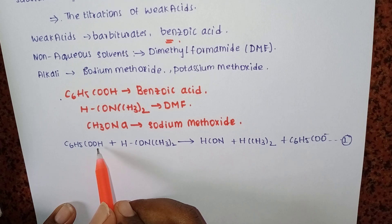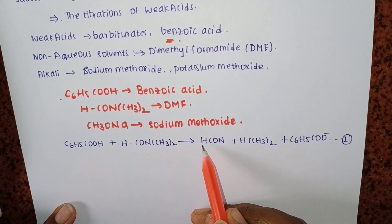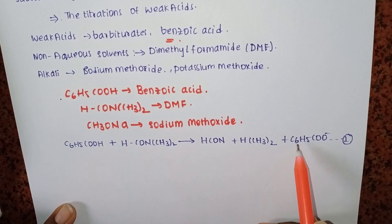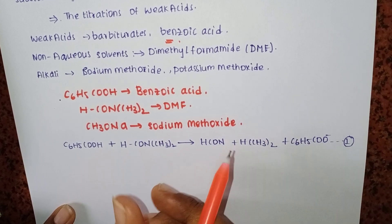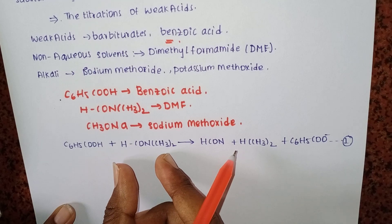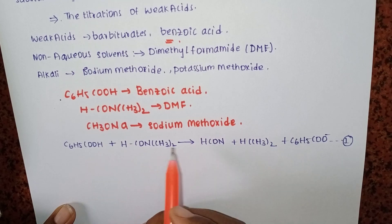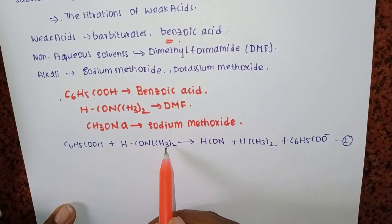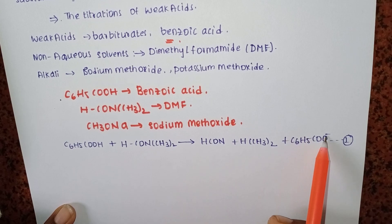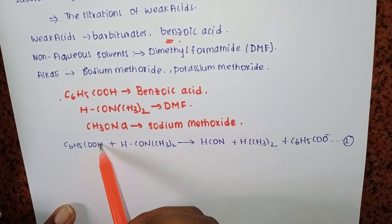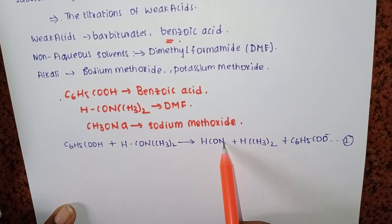Benzoic acid liberates ions — the liberated species is C6H5COO-. After separation, dimethyl separates. Here, H+ is liberated, and the acid ionizes.